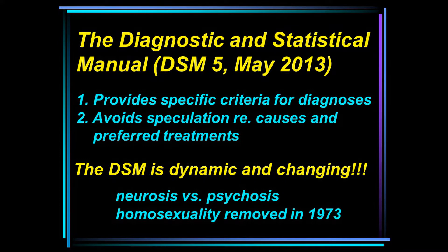Another example of how the DSM is dynamic and changing: back in 1973, homosexuality was removed from the DSM. Today, if someone goes to a therapist for some type of phobia, it would be inappropriate for the therapist to attempt to change their sexuality, change their sexual orientation, or even imply there's something wrong with a person based on their sexual orientation. Those changes typically occur as a result of new research findings but also cultural changes in our society.